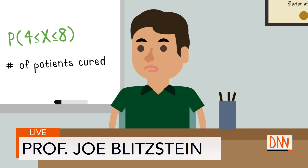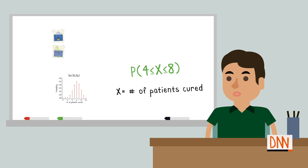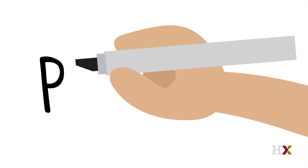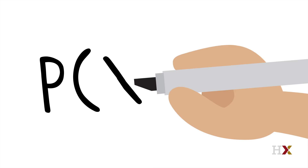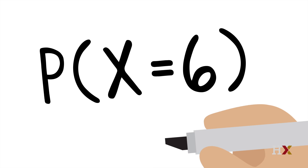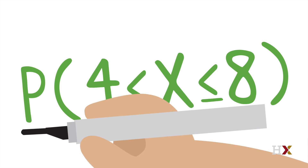When we are looking at a quantity that can take on various possible values, the distribution tells us how likely any particular value or range of values is. Let's say we want to predict X, the number of patients who will be cured tomorrow. The distribution of X specifies the answers to questions like, what's the probability that X is 6? Or what's the probability that X is between 4 and 8?